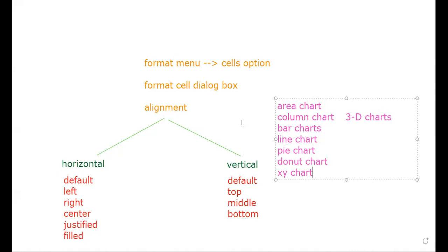The next chart is the net chart. In a net chart, you connect dots using lines forming a net or grid. It displays data values as points connected by lines in the form of a net.